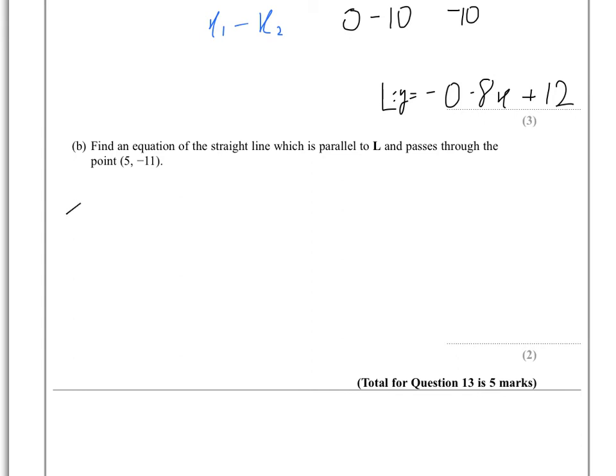So again, parallel equals gradient is the same, so that means the gradient is minus 0.8. So we actually have part of our equation already, we know it's y equals minus 0.8x, we just need to work out the y-intercept now. So we know it goes through the point (5, -11).